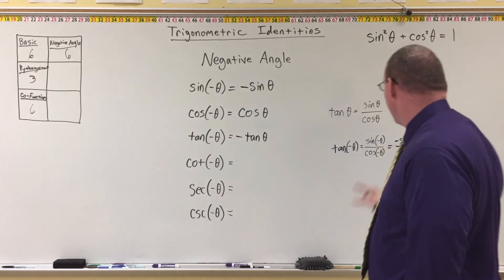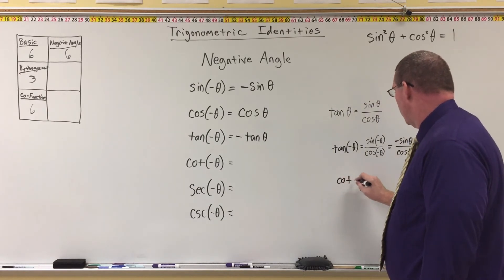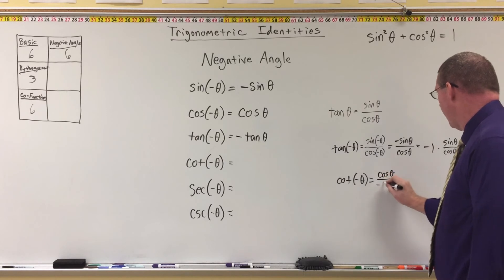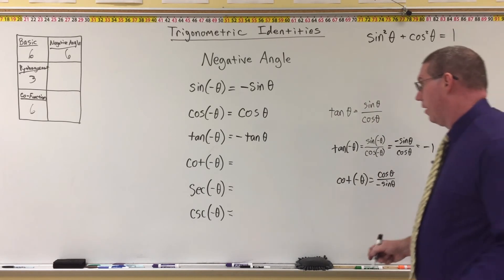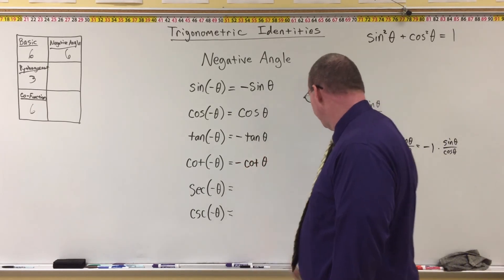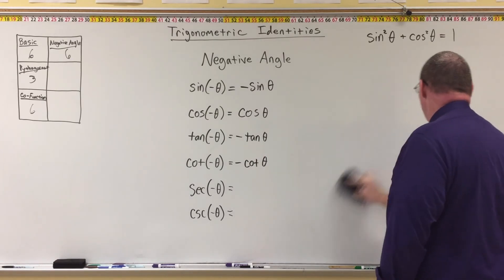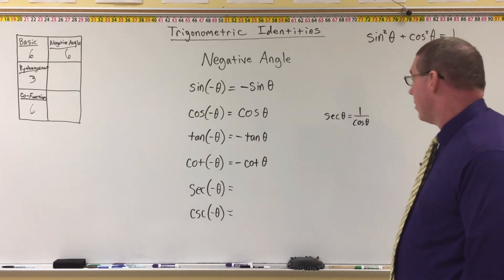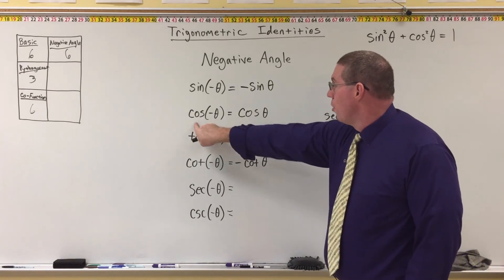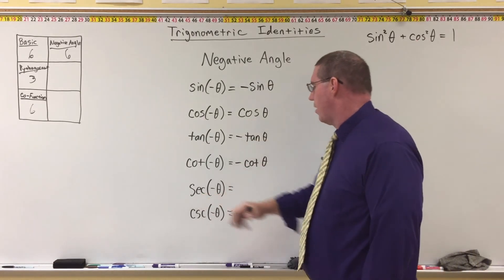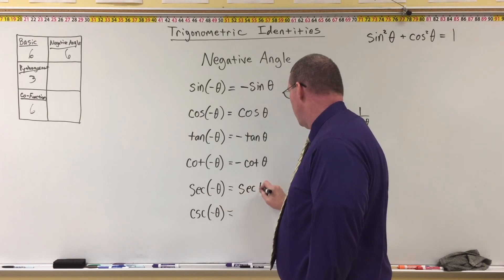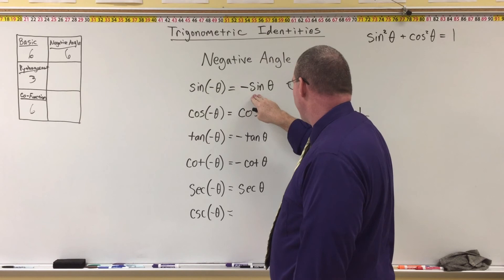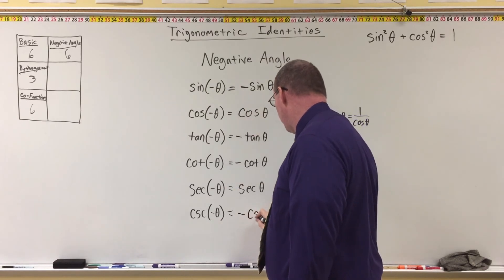The exact same thing happens with cotangent, because cotangent is just the reciprocal. Cotangent of negative theta becomes cosine of theta over negative sine of theta — a positive divided by a negative — which is still negative, giving negative cotangent of theta. For secant, since secant is one over cosine and cosine doesn't change, secant of negative theta equals secant of theta. And since cosecant is related to sine, and sine changed to negative sine, cosecant of negative theta becomes negative cosecant of theta.